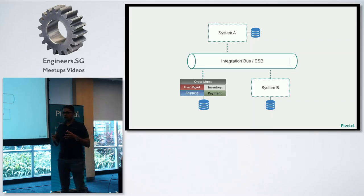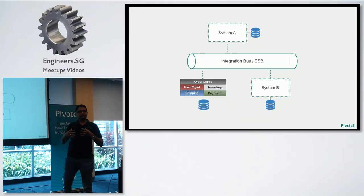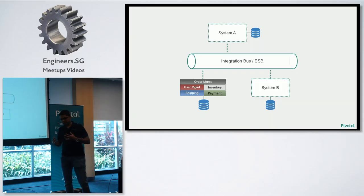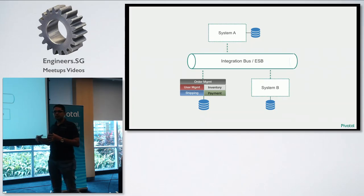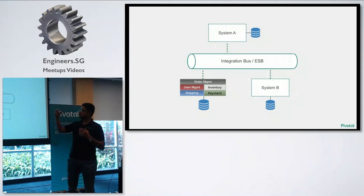From an enterprise architecture point of view, traditionally you have all these big monolithic systems. As you grow, you end up introducing things like an integration bus or enterprise service bus, which helps move data from one system to another. As they get bigger, the enterprise bus becomes the key integration point between systems. The challenge then is if you change one system, all the other systems are impacted, which means you need a team managing all those integration buses and doing impact analysis for every change.